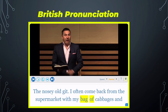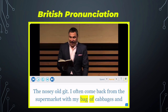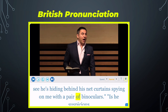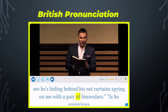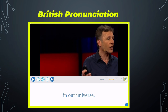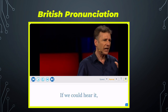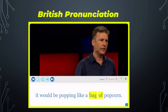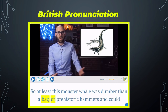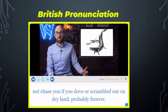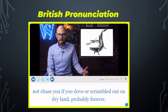The nosy old git often comes back from the supermarket with a bag of cabbages, and you see he's hiding behind his net curtains spying on me with a pair of binoculars. Ten supernovae per second explode somewhere in our universe — if we could hear it, it would be popping like a bag of popcorn. So at least this monster whale was dumber than a bag of prehistoric hammers and could not chase you if you dove or scrambled out onto dry land.